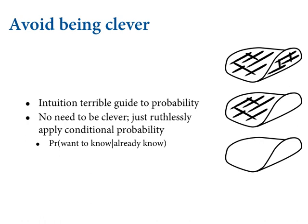If you avoid being clever, you will appear very clever to people who are trying to be clever. Intuition is a terrible guide to probability — it's not intuitive at all. But you don't need to be clever to solve these problems. You just need to be ruthless. Just apply conditional probability. Conditional probability has very few rules — they're the laws of probability. When you're fitting statistical models in this class, this is all you're using. When you set up the model definition, you're defining all the assumptions, and then the laws of conditional probability let you find the implications of those assumptions.